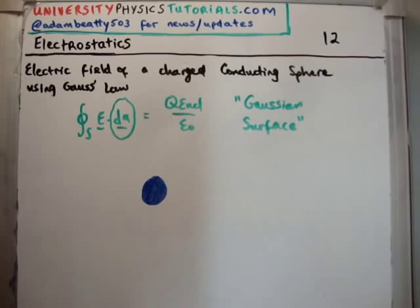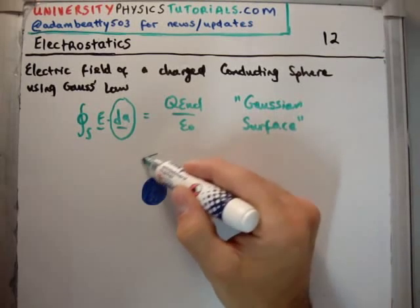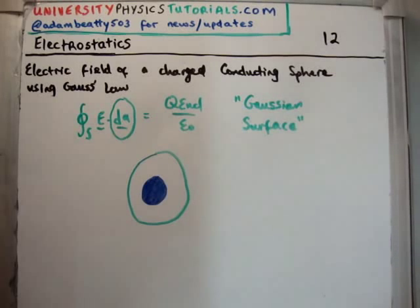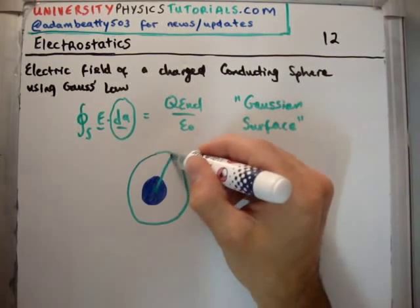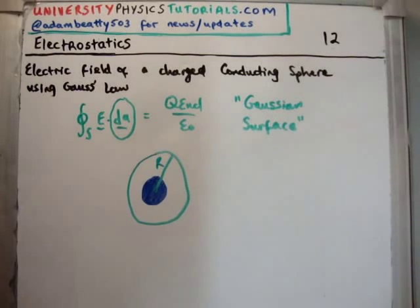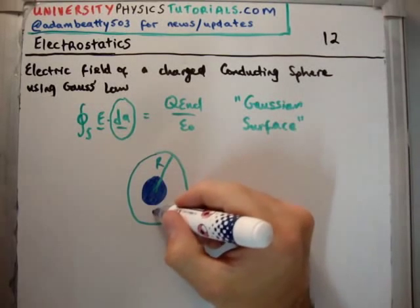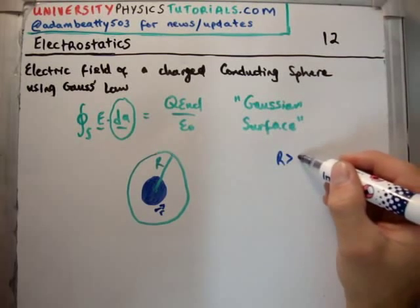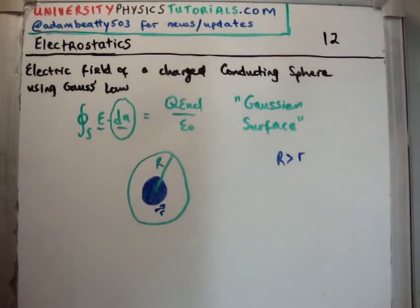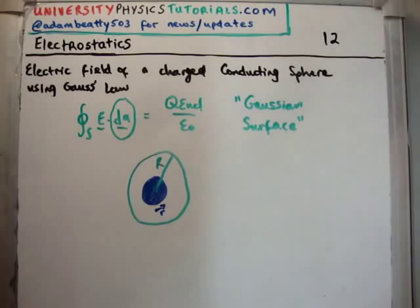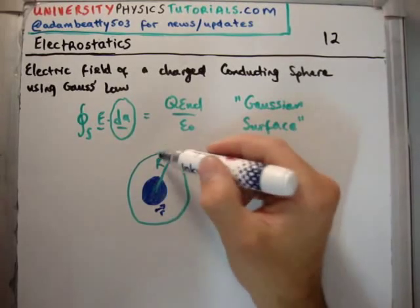We're talking about a spherical charged conducting sphere, so we suggest that we take a sphere as our Gaussian surface. The sphere has a radius with a capital R, and the charged sphere has a radius of r. We take the Gaussian surface to have a larger radius than the actual sphere itself.